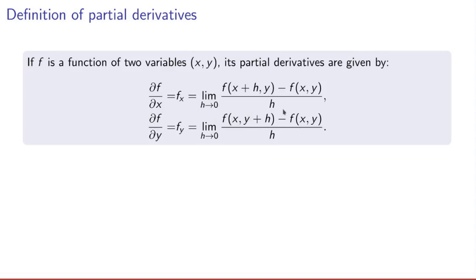It's important to note that this is a limit in a single variable, which is different from the limit of functions of two variables studied in a previous video. Here we're really only doing a limit in the x variable keeping y fixed. Of course, you can define in the same way the partial derivative of the function with respect to y, given by the limit of the difference quotient where you take the rate of change in the y variable while keeping x fixed.